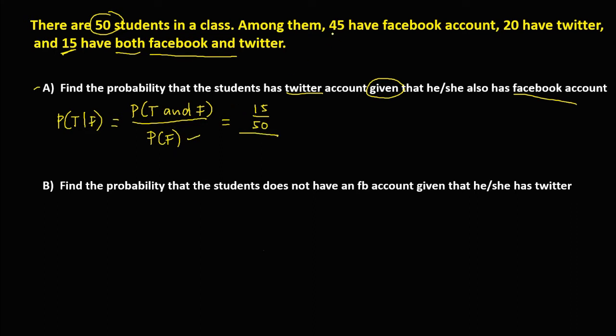Then over the probability of having a Facebook account — since 45 students have a Facebook account, the probability is 45 over 50.